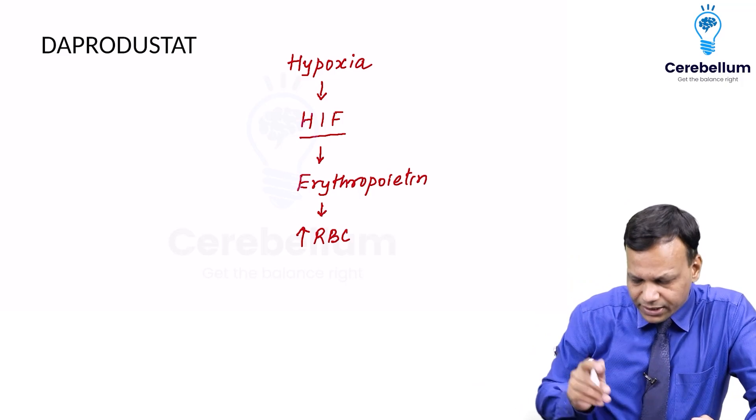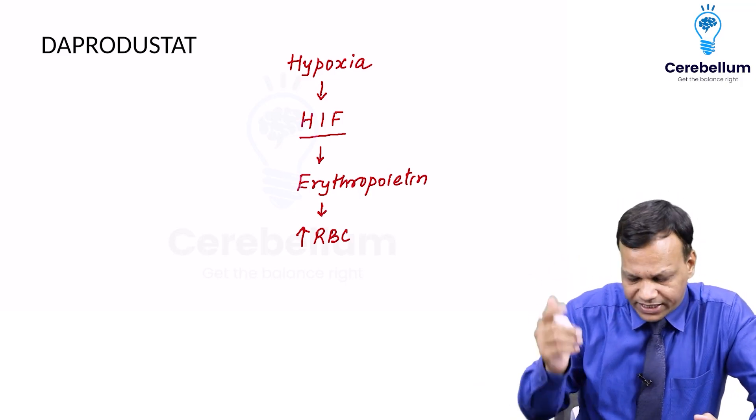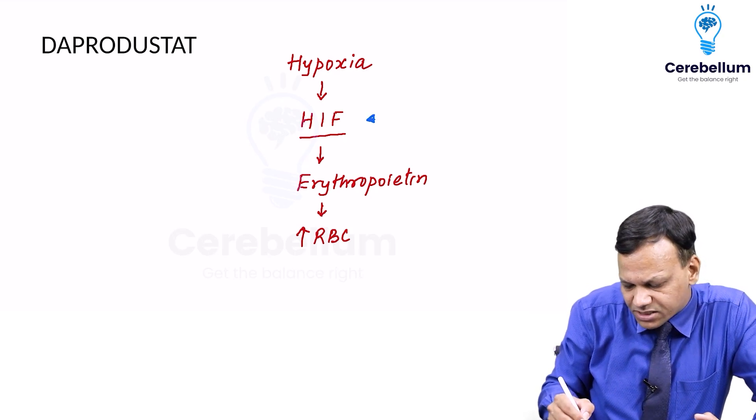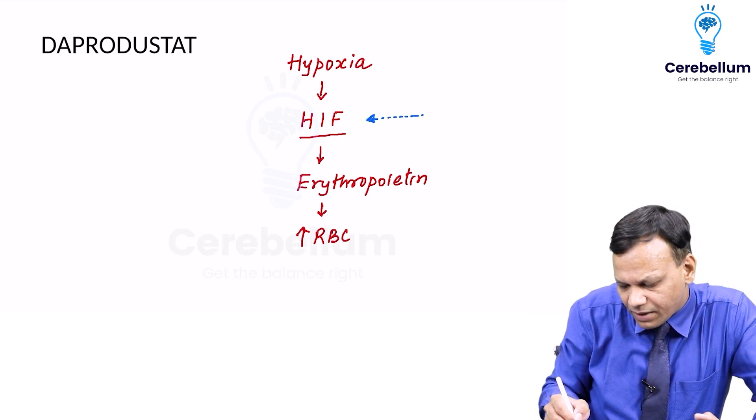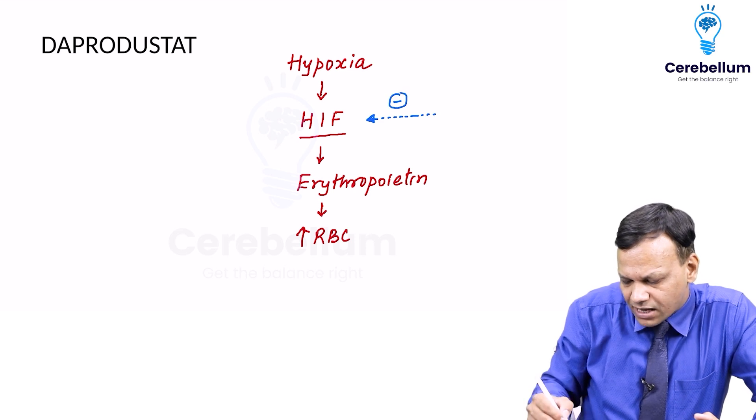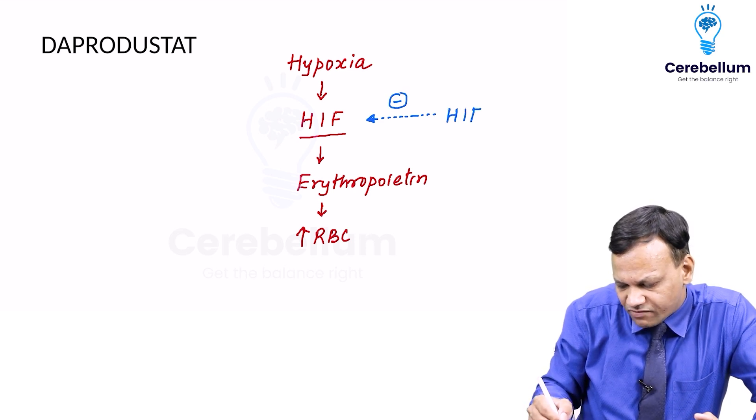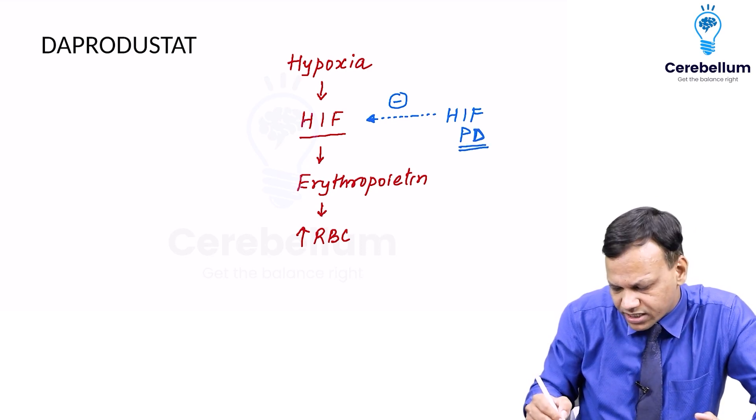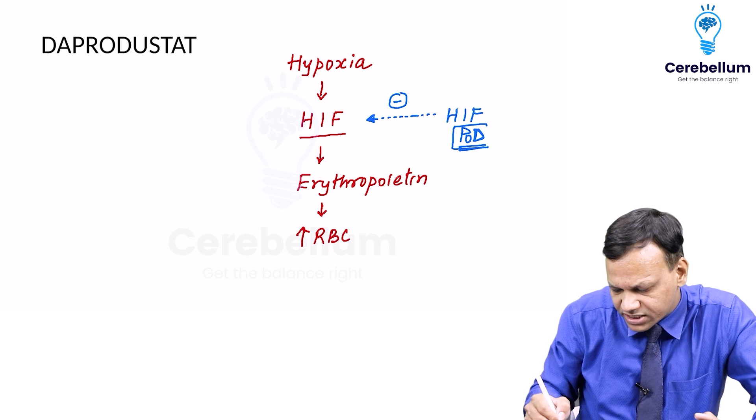But normally, the HIF, hypoxia inducible factor, is normally inhibited by an enzyme. It is metabolized, or we can say inactivated, by an enzyme called hypoxia inducible factor proline hydroxylase. Proline hydroxylase is usually written as PHD, proline hydroxylase.